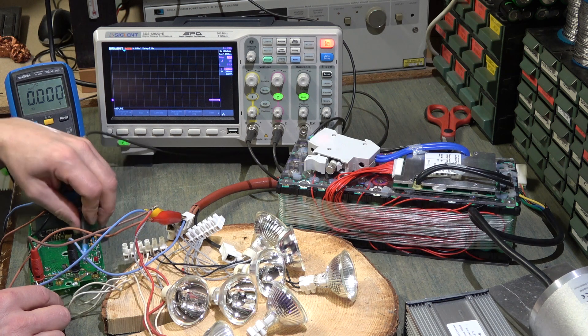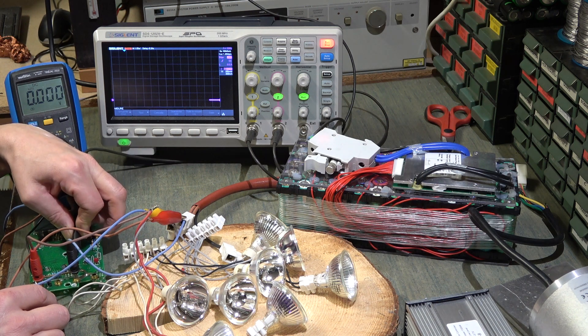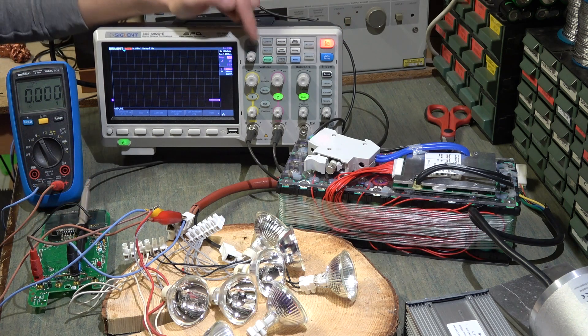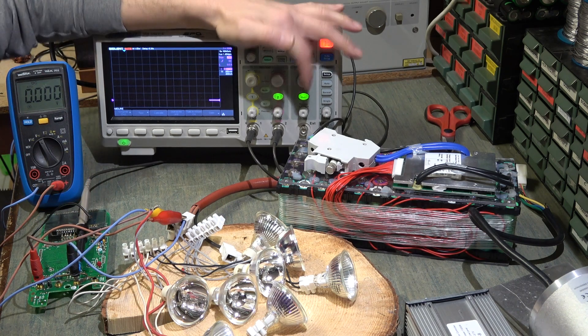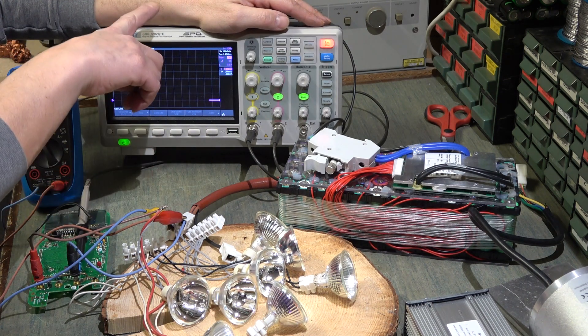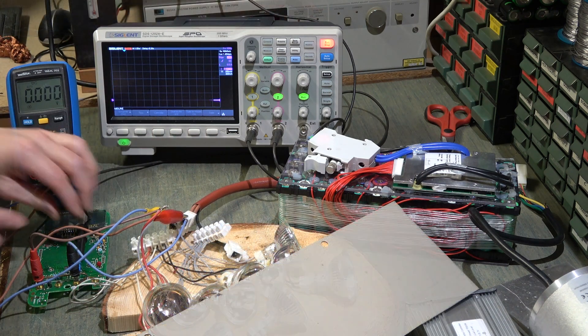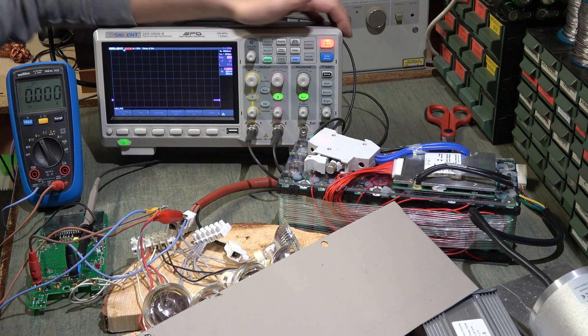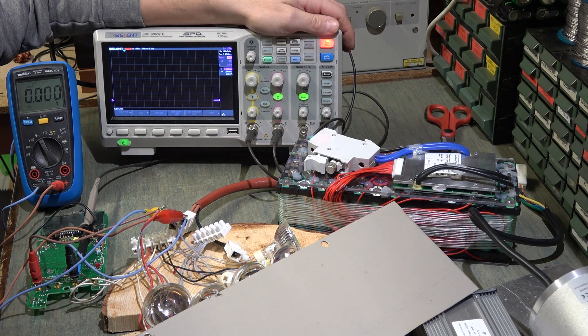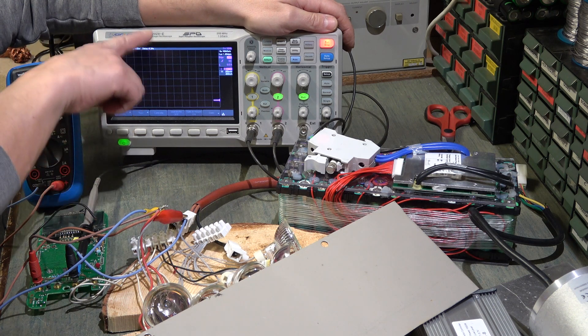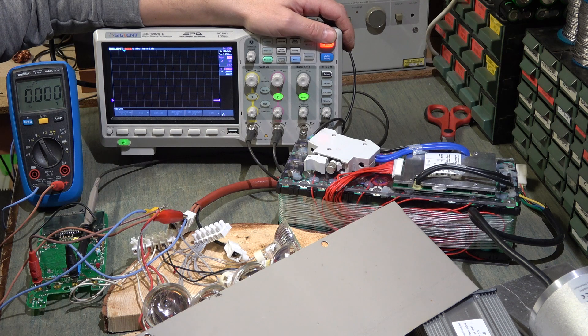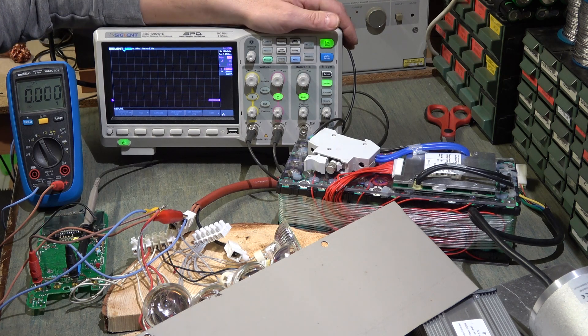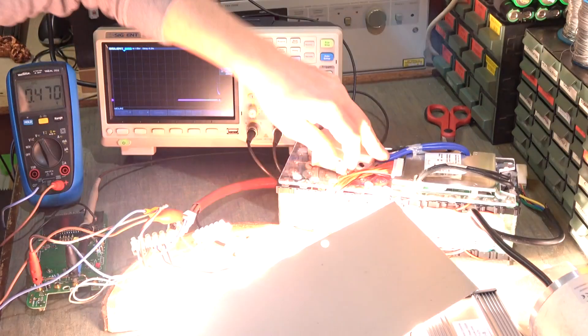Mi attacco con l'oscilloscopio, collego la sonda. Faccio partire l'oscilloscopio in modalità roll di modo da vedere lo spunto e la corrente normale che assorbe. Ho collegato la sonda, ora vi farò vedere. Faccio partire, ho già preparato tutto e poi vi spiegherò il calcolo per vedere quanta corrente di spunto ha questo carico. Faccio partire, accendo.